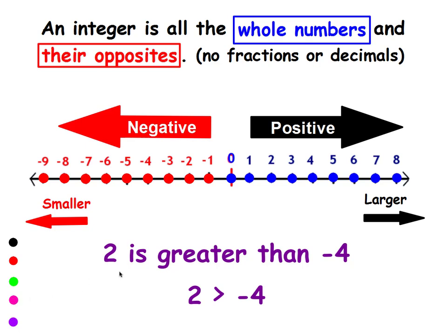Here's another one. 2 is greater than negative 4, and that's true. 2 is farther to the right, which makes it larger than negative 4. And I would write this as 2 is greater than negative 4.